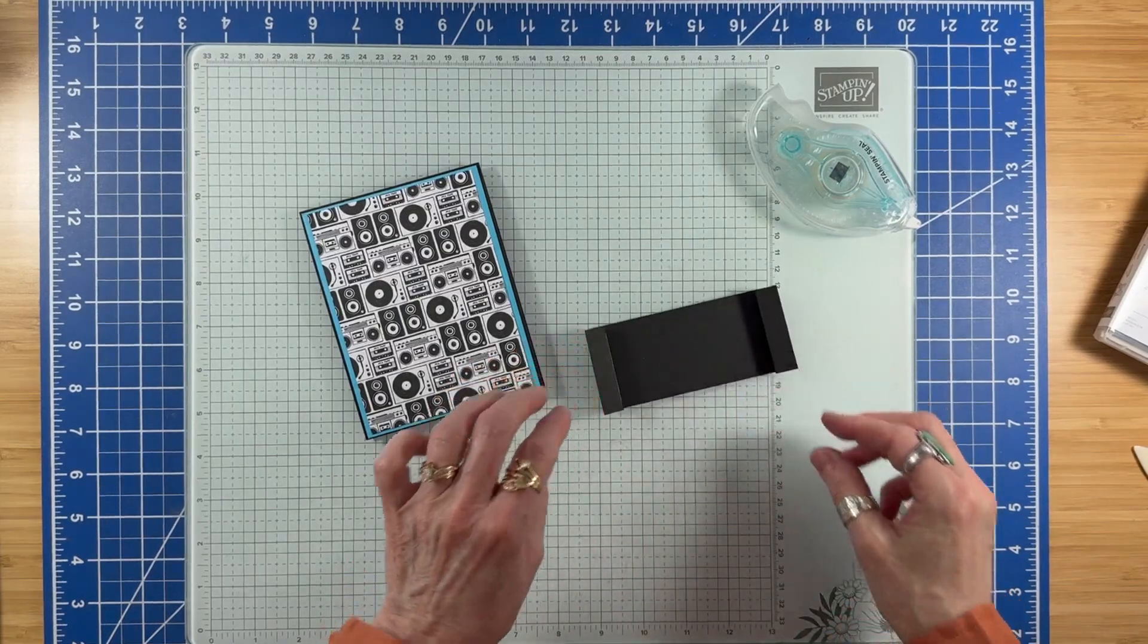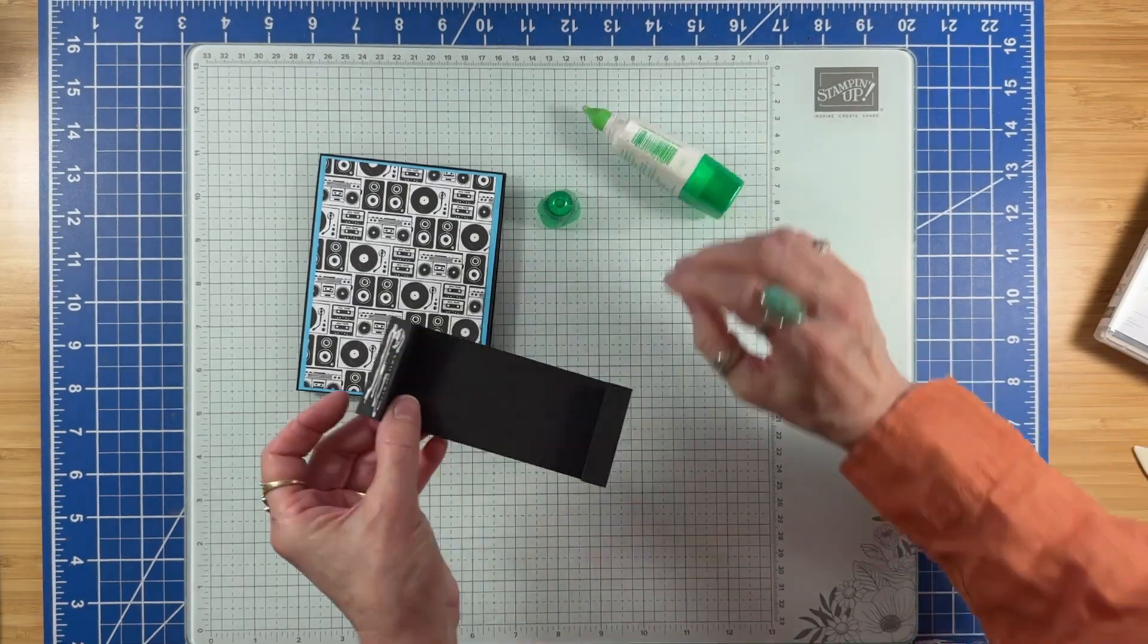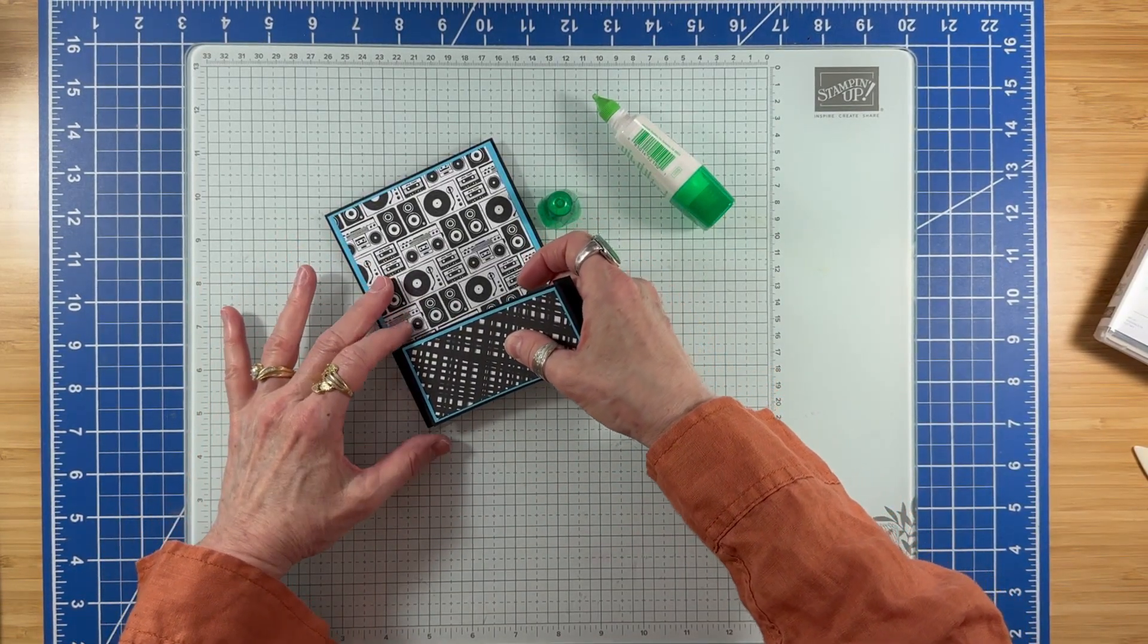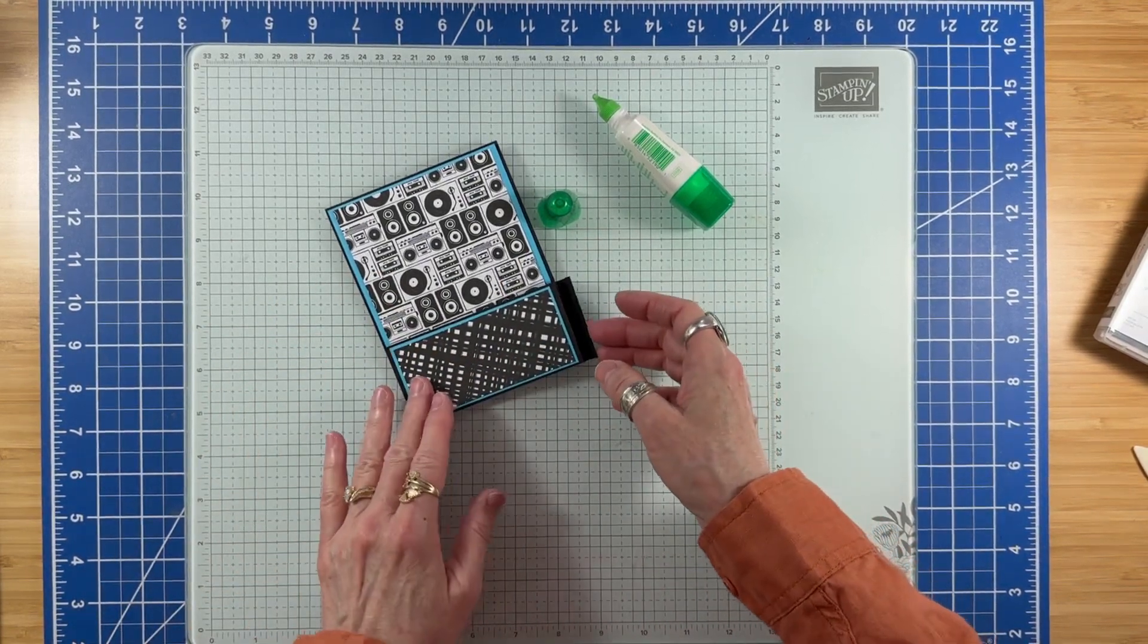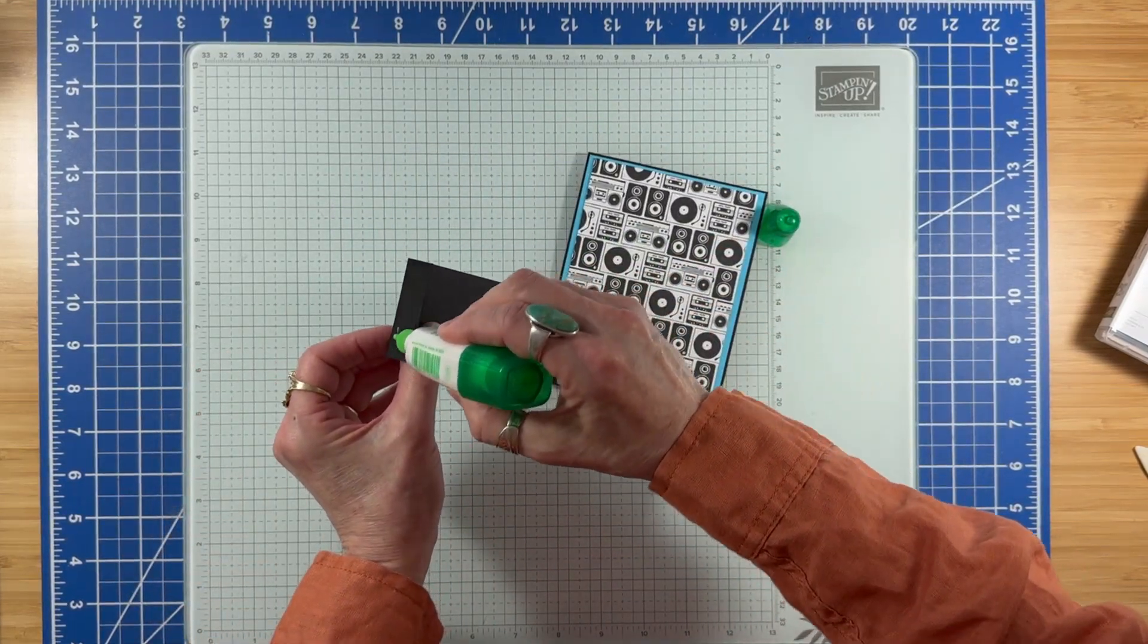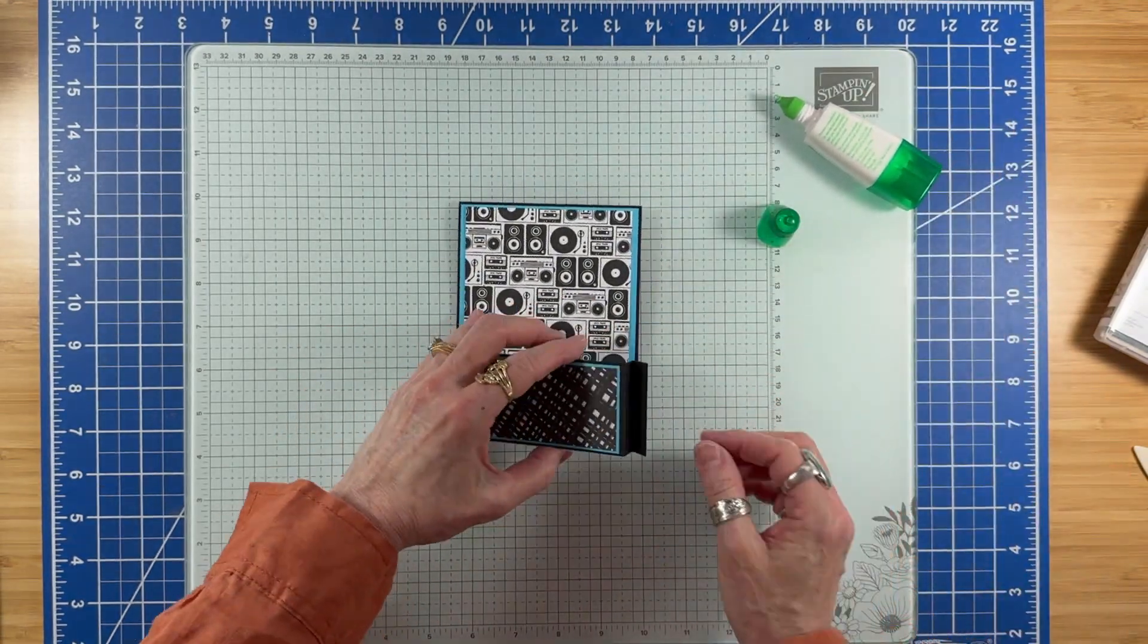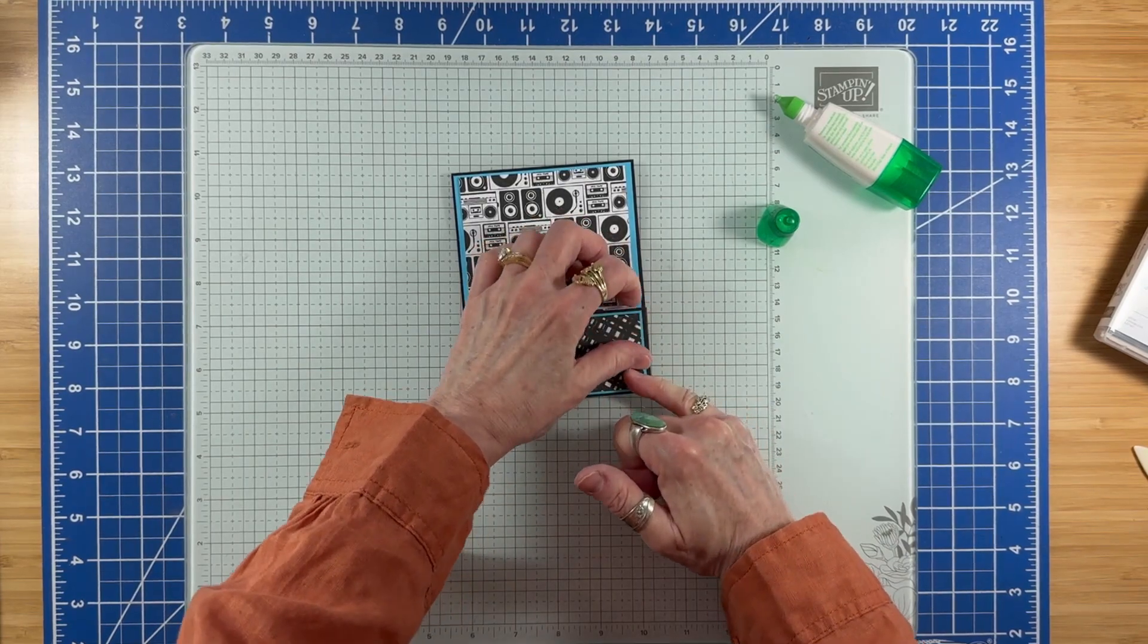I'm going to flip that over and add adhesive on here, then line that up with the bottom corner of my card. Then I'm going to add adhesive on this edge and line that edge up with my card.